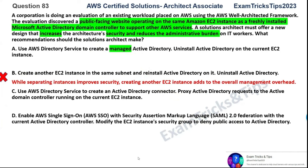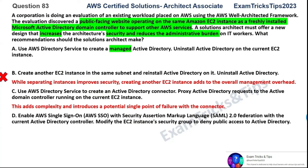Option C: use AWS Directory Service to create an Active Directory connector and proxy Active Directory requests to the Active Directory domain controller. This adds complexity and introduces a single point of failure with the connector. Whenever you see a lot of services being mismatched in a particular option, that is always a wrong answer. I'm looking for something much simpler and purpose-built, because I believe AWS will have a much more purpose-built service for this particular scenario.